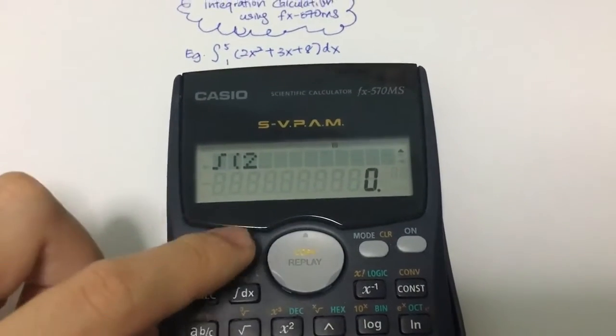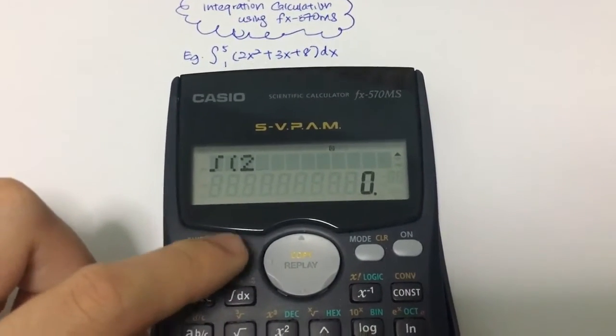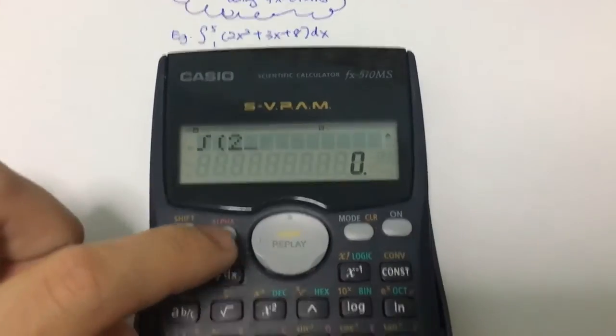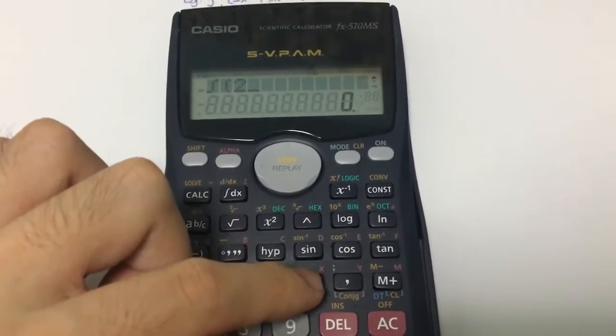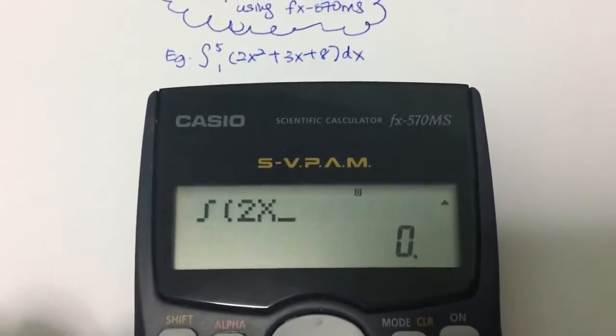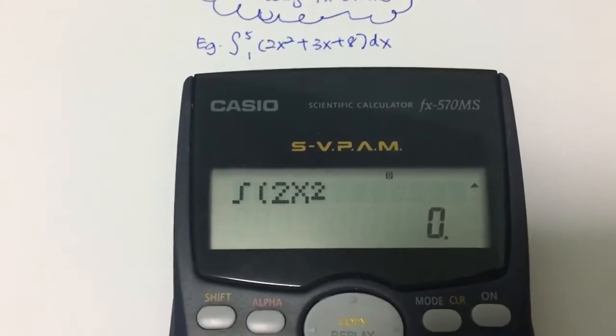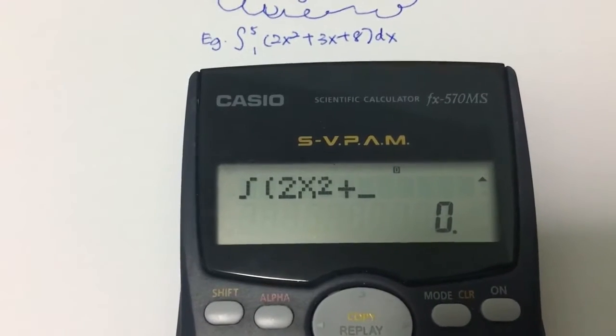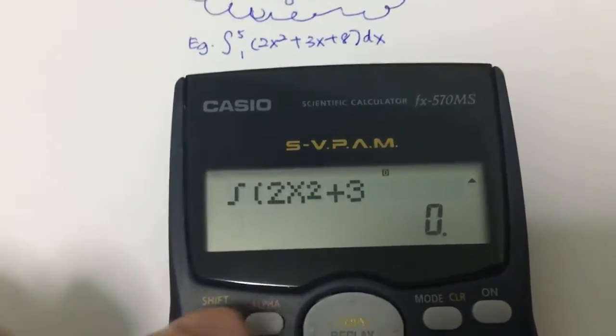How do you type 2? Just type 2. But x, how do you type x? You have to press alpha and then you see this pink color x down here, you press x. Then the x will appear. And of course, square. What do you do next? You plus 3 and do the same.